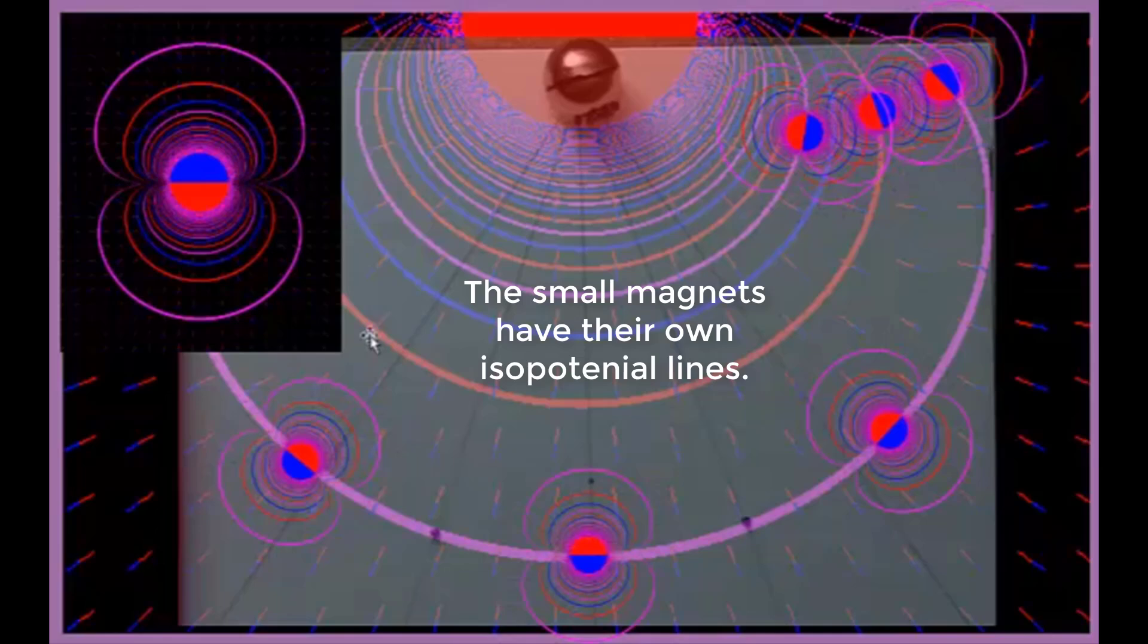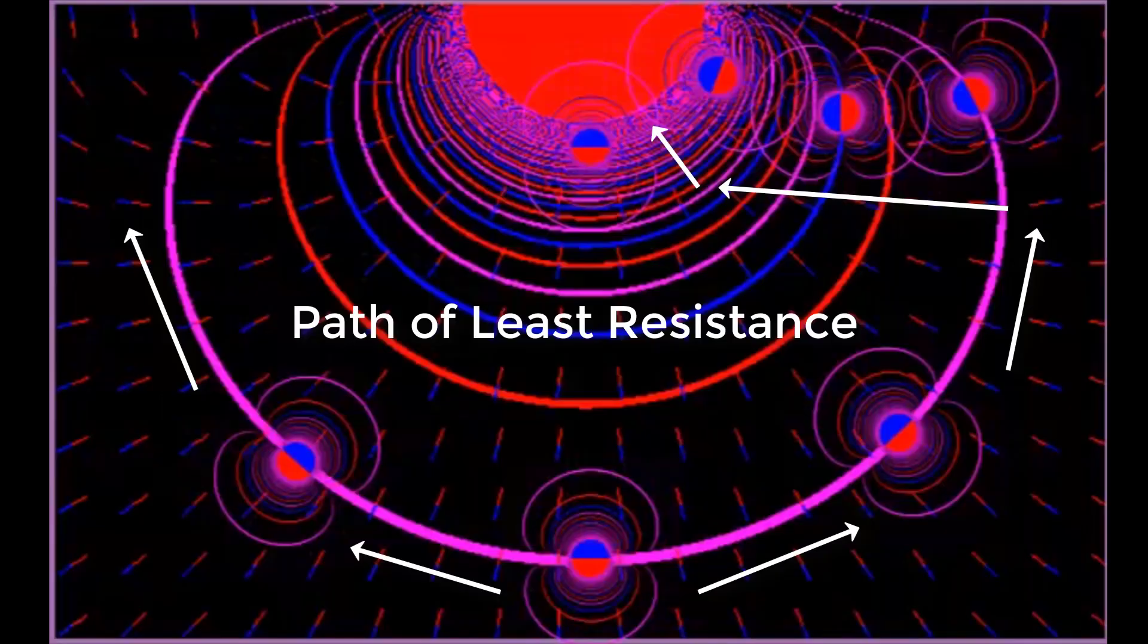The small magnets have their own isopotential lines. The small magnets follow the path of least resistance.